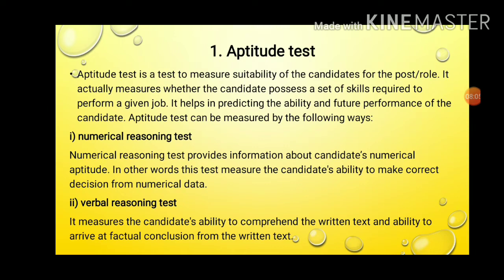The first is the numerical reasoning test, which provides information about a candidate's numerical aptitude. In other words, this test measures the candidate's ability to make correct decisions from numerical data. The second is the verbal reasoning test, which measures the ability to arrive at factual conclusions from written text.